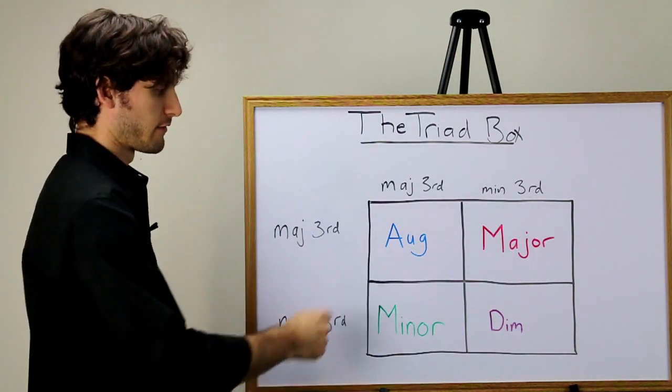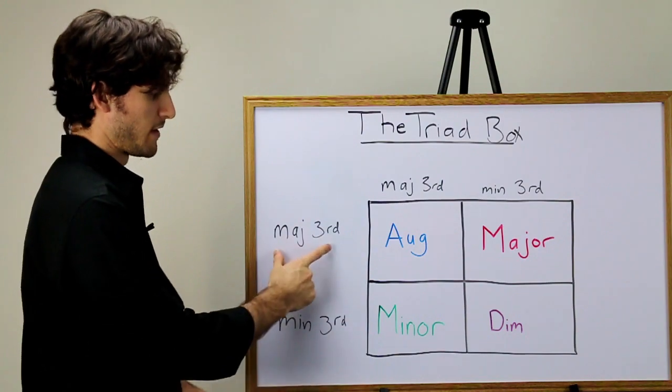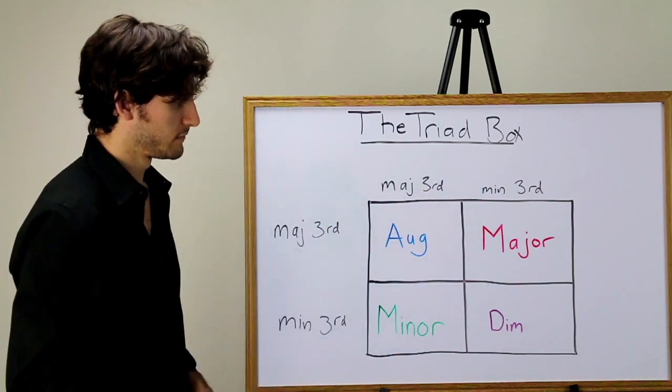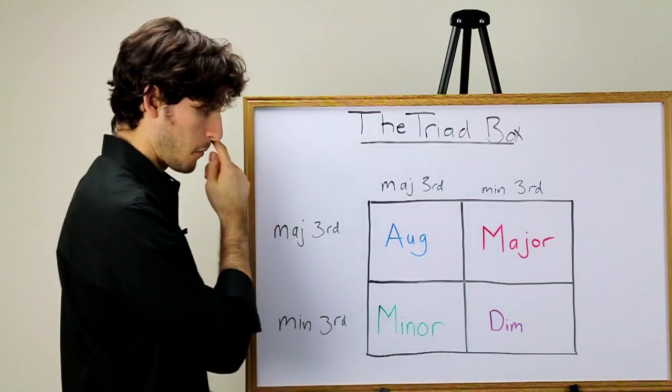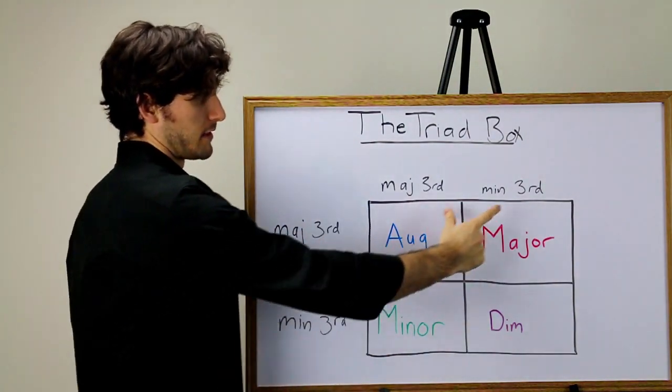Let's go through it one more time. To get an augmented triad, we stack a major third plus a major third. To get a major triad, we stack a major third plus a minor third.